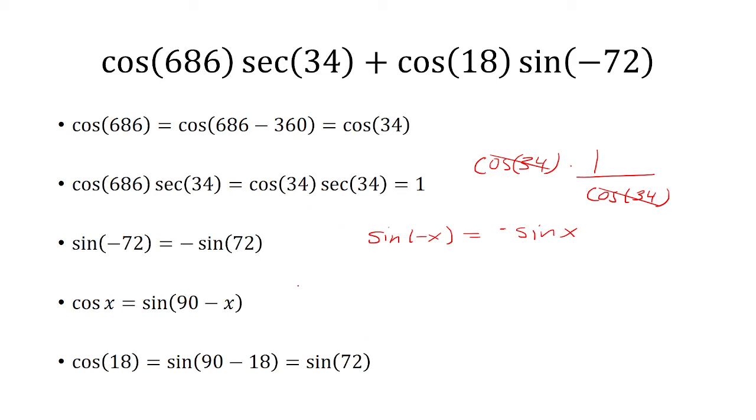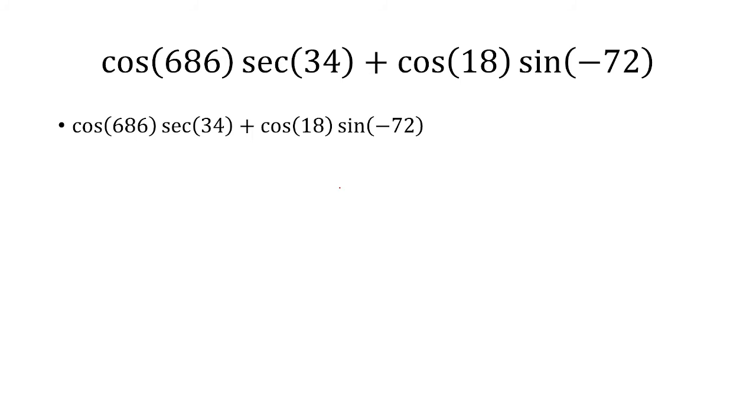So we're going to use these facts to simplify the problem. So this is what we started with. We said that cosine of 686 times secant of 34 is the same thing as cosine of 34 times secant of 34.